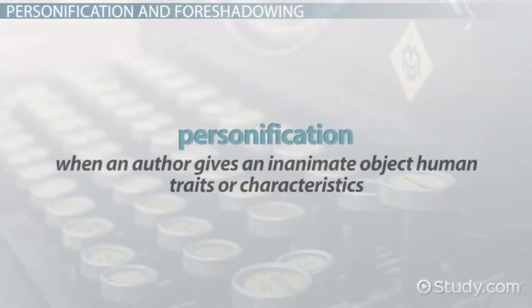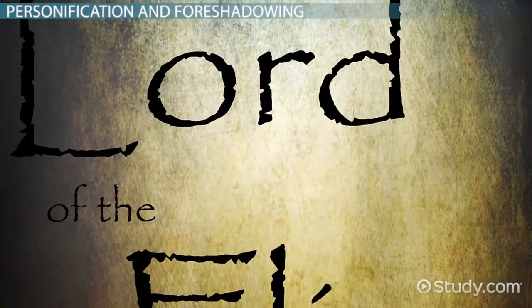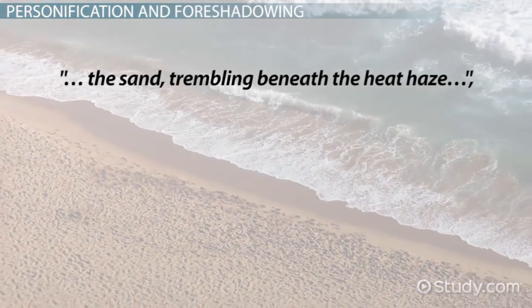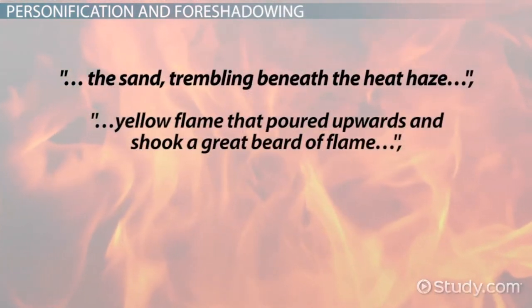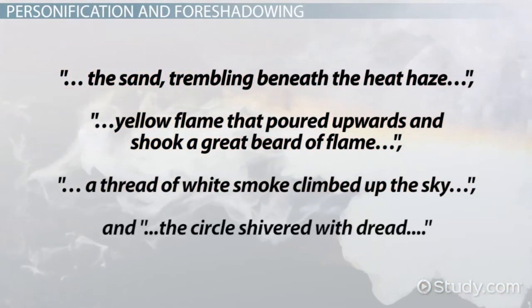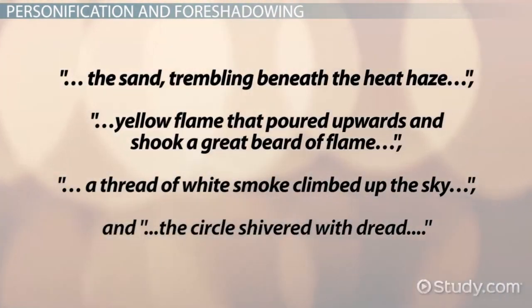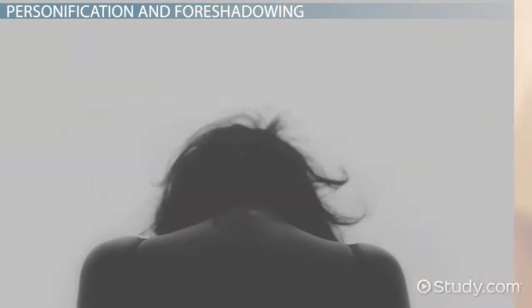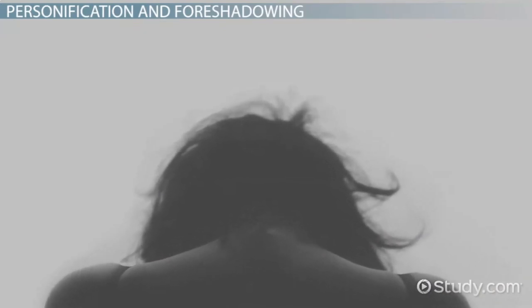Personification is when an author gives an inanimate object human traits or characteristics. Here are some examples from Lord of the Flies: "The sand trembling beneath the heat haze." "Yellow flame that poured upwards and shook a great beard of flame." "A thread of white smoke climbed up the sky, and the circle shivered with dread." Sand cannot tremble, flames cannot shake, smoke cannot climb, and circles cannot shiver or feel emotions. These are all things humans can do, not inanimate objects, which is why these are examples of personification.